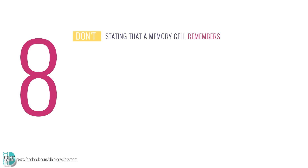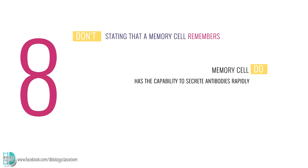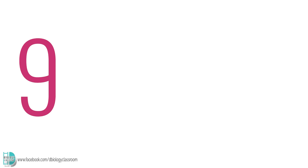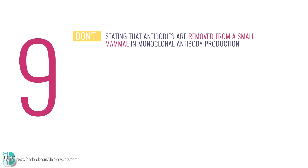Number eight: stating that a memory cell remembers. A memory cell has the capability to secrete antibodies rapidly, or act as T helper or T killer cells immediately, when a specific antigen that the body has previously encountered is detected again. The correct term to use is that it provides immunological memory.